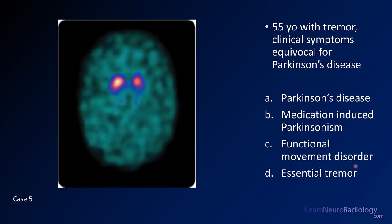Case 5 is a 55-year-old with tremor and clinical symptoms equivocal for Parkinson's disease. I'm not going to tell you what kind of scan this is, but hopefully the fact that it's a color map will help you out. Your choices are Parkinson's disease, medication-induced Parkinsonism, functional movement disorder, or central tremor.